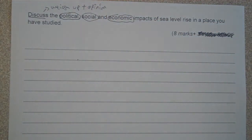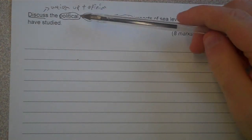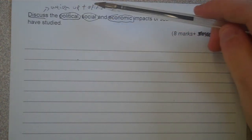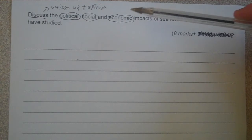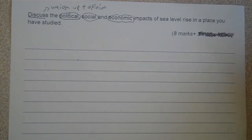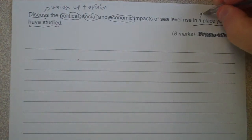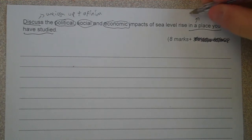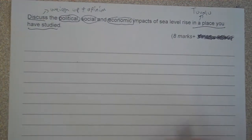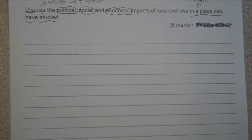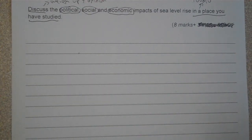It's a bit of a challenge — can we get all three in there? I'm thinking, can I do a little PEEL paragraph on political, one on social and one on economic for sea level rise in a place you've studied? The place we have studied is Tuvalu, a small set of nine islands in the Pacific Ocean. So here we go: three little PEEL paragraphs — political, social and economic.